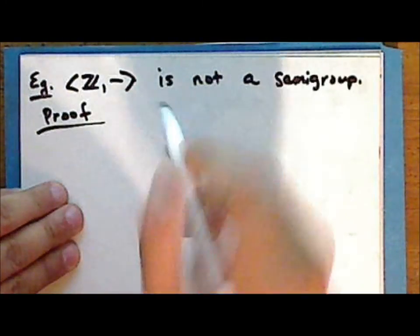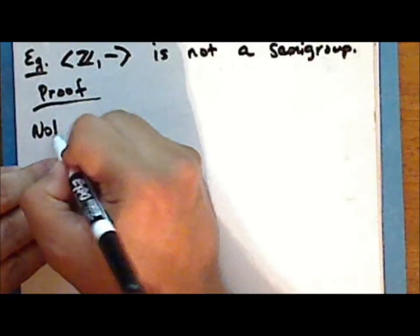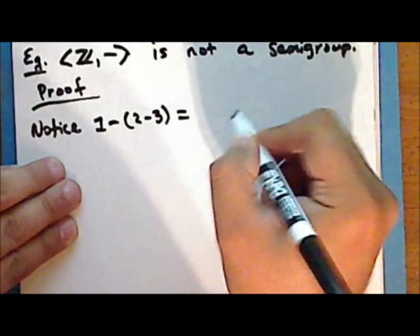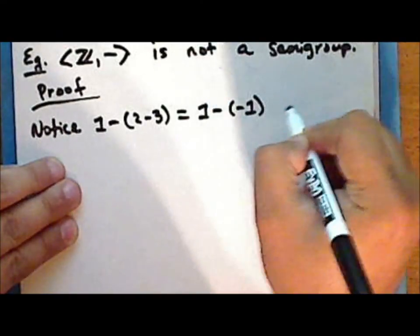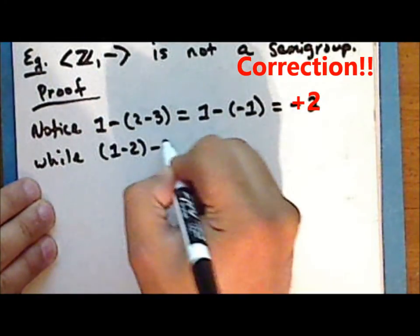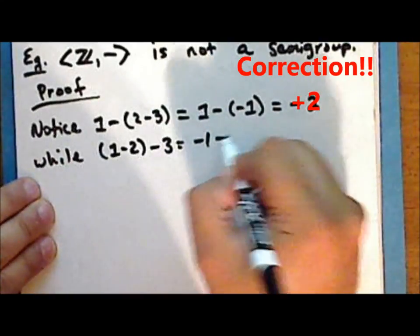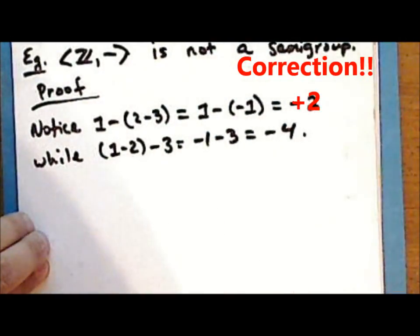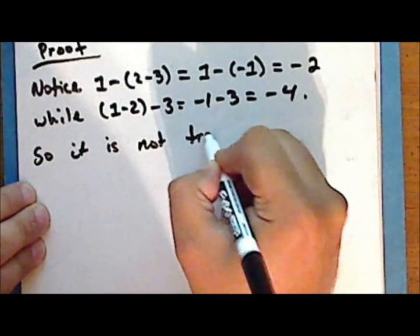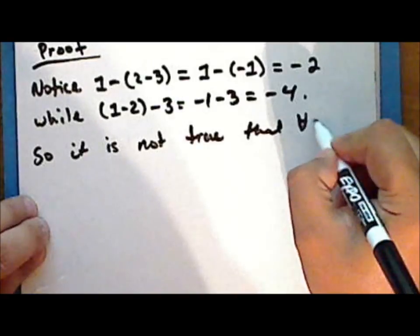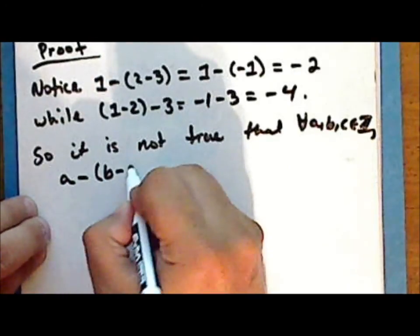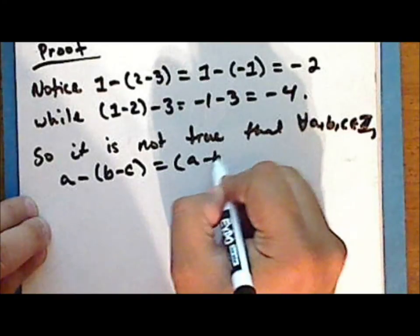Proof. Notice that 1 − (2 − 3) = 1 − (−1) = 2, while (1 − 2) − 3 = (−1) − 3 = −4. So it is not true that for every three integers A, B, and C, A − (B − C) = (A − B) − C, and hence the integers under subtraction are not a semigroup.